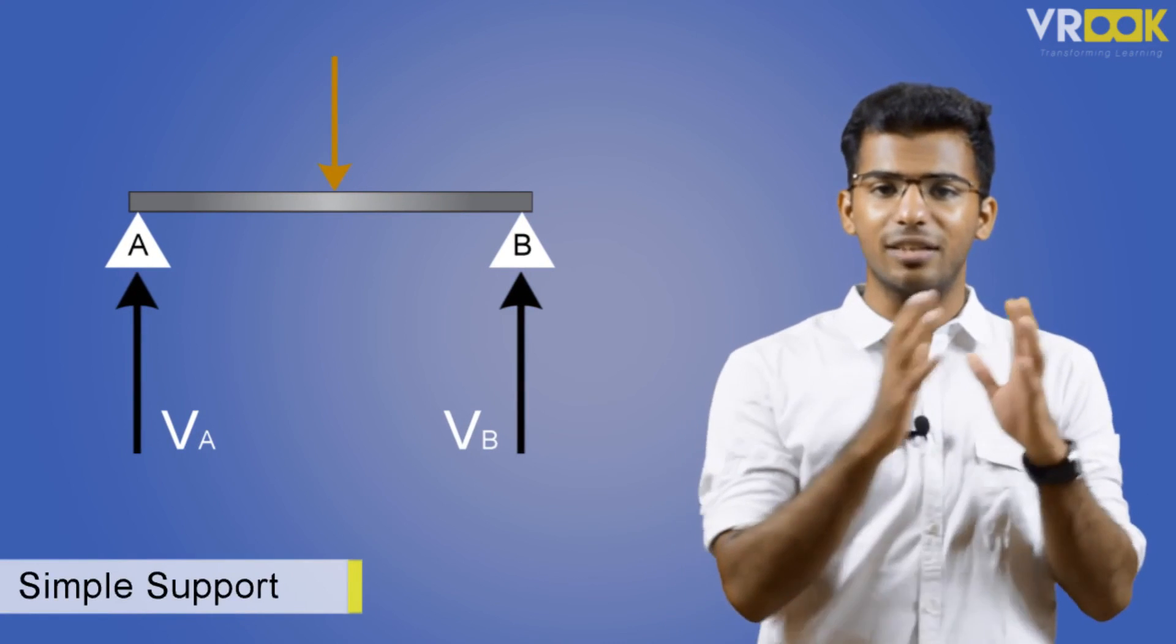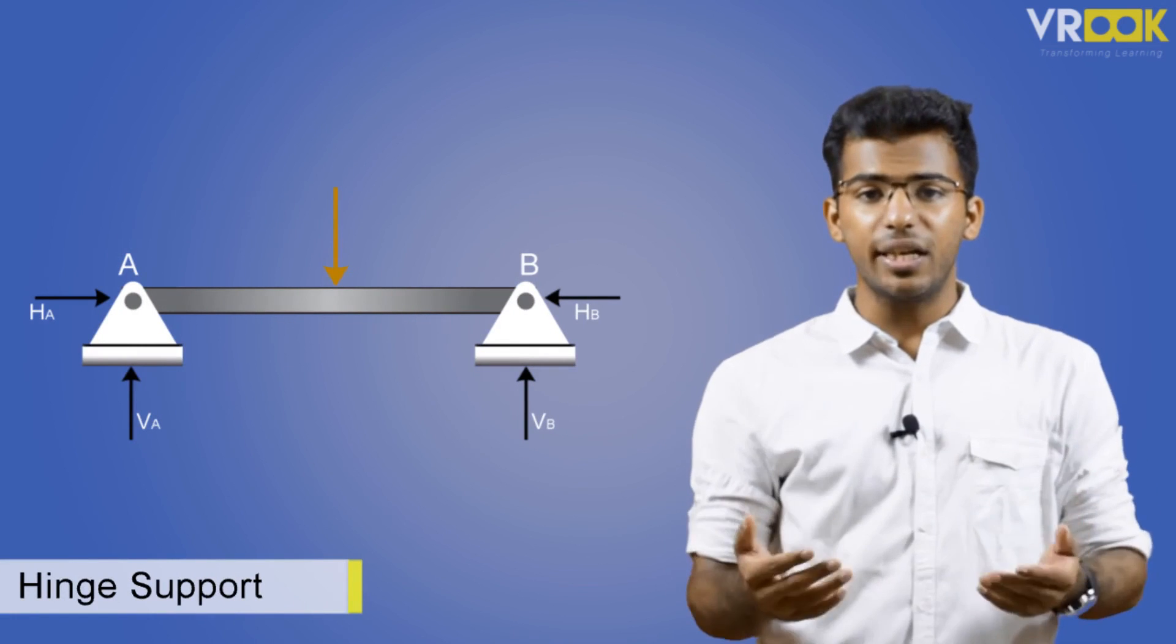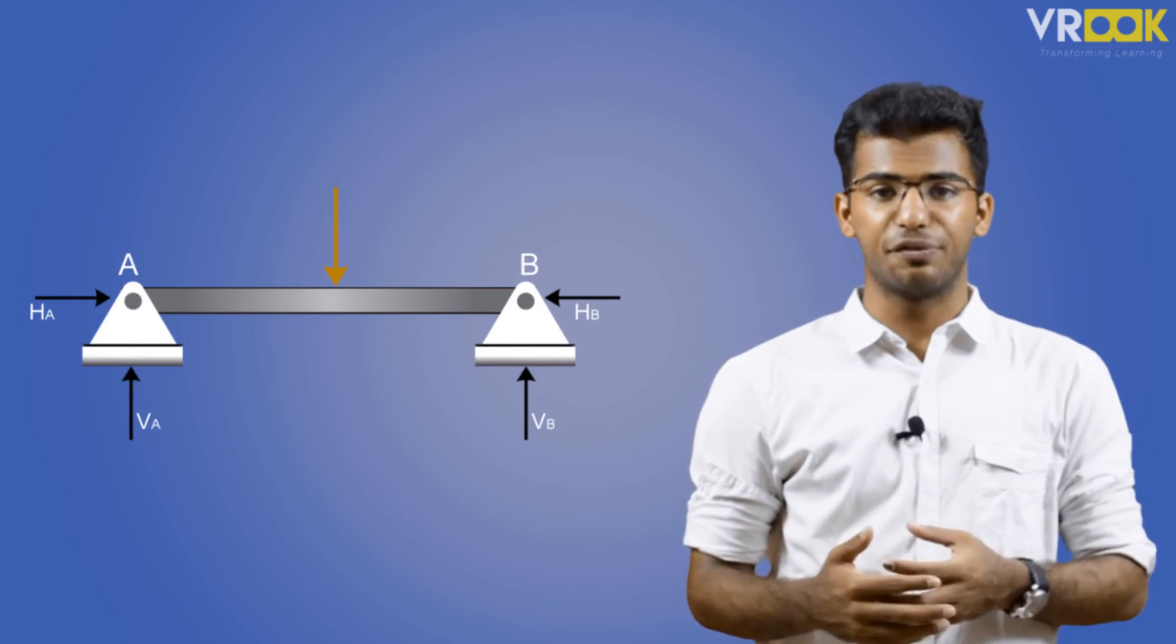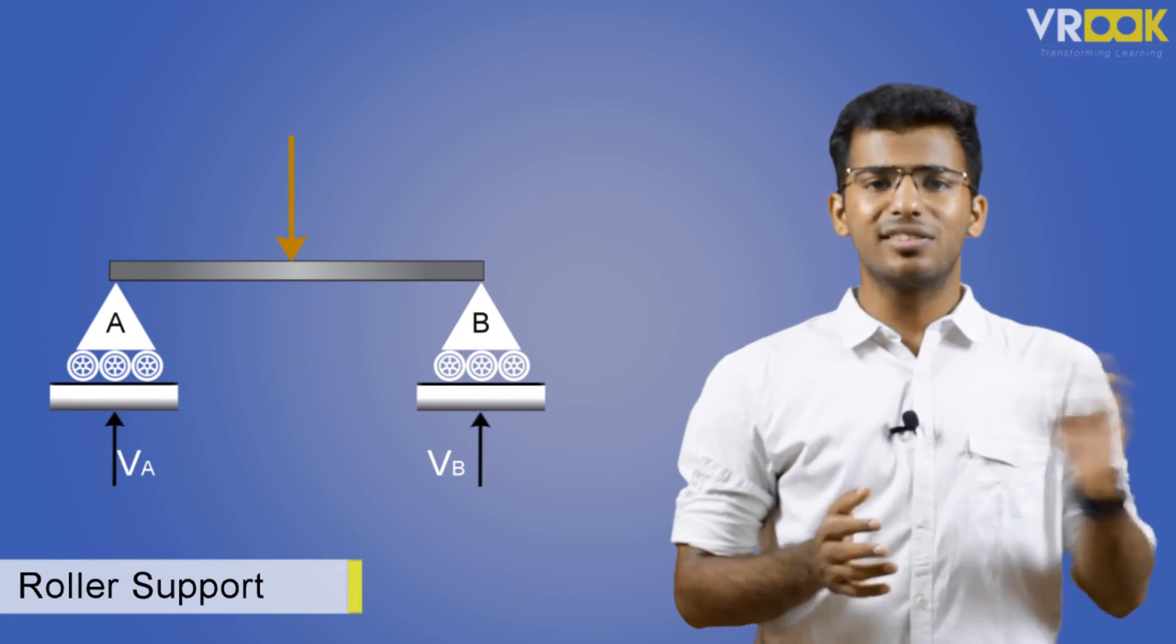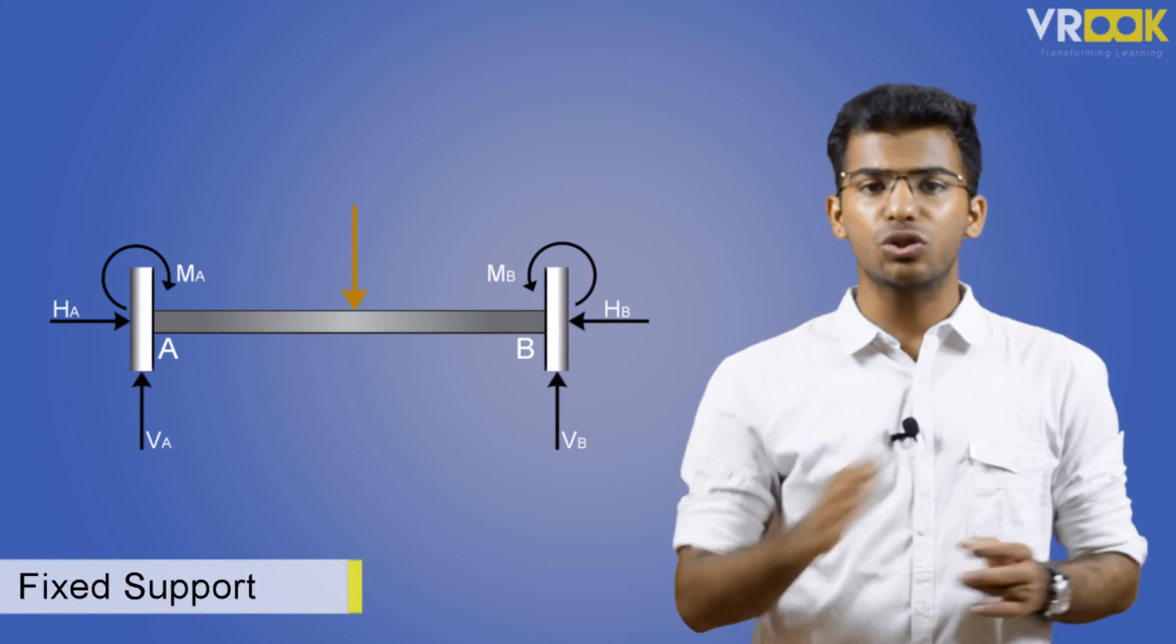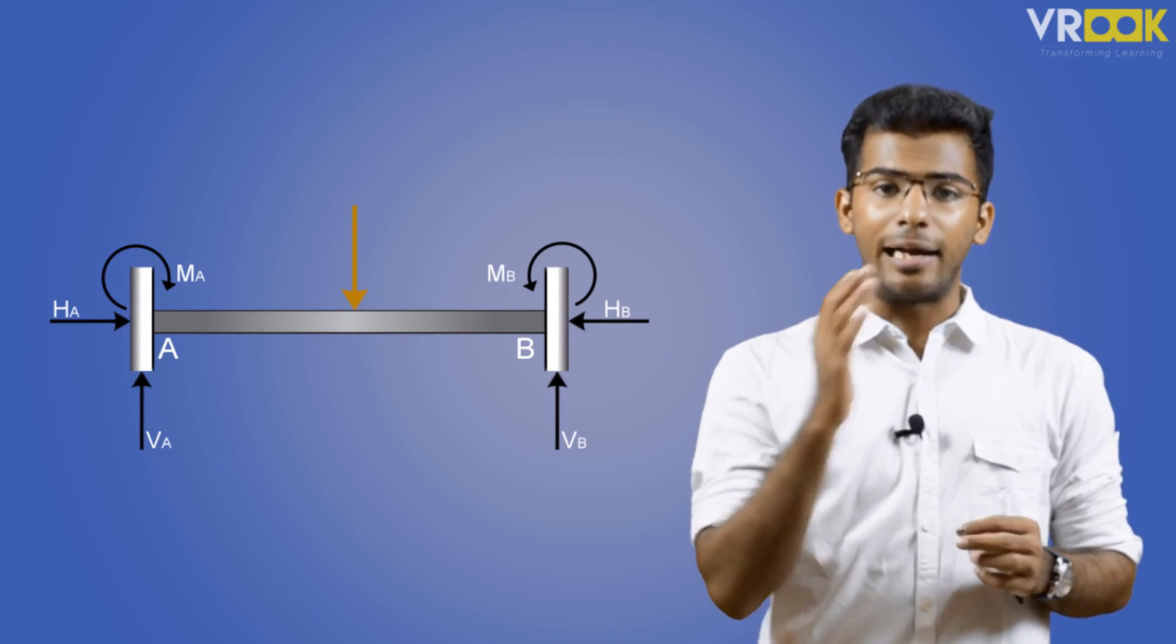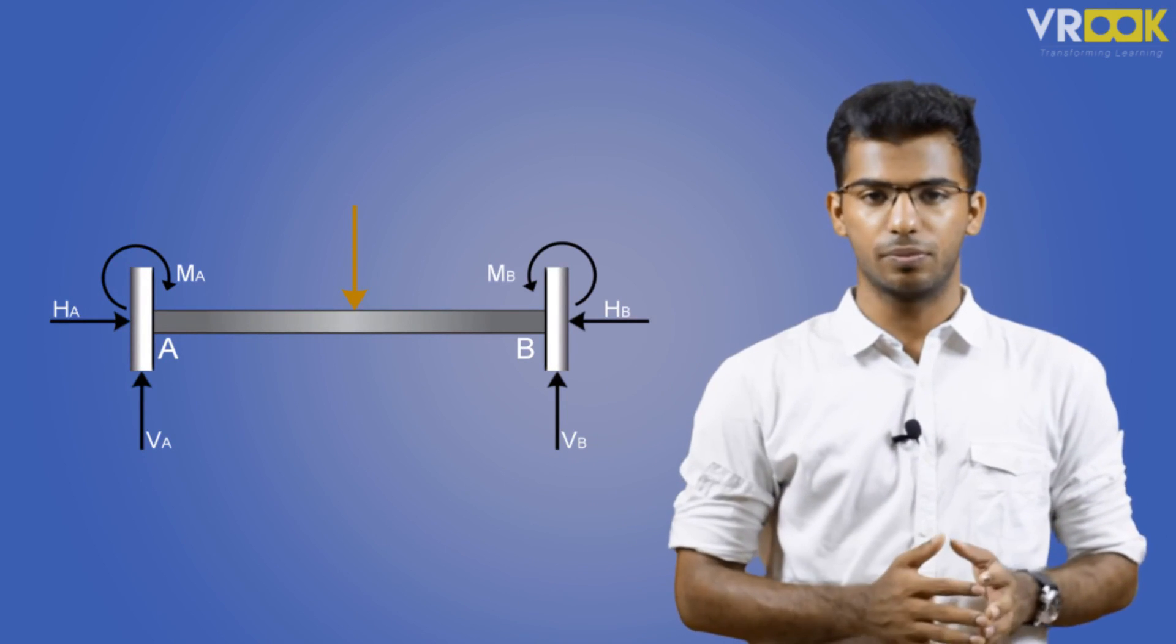Those are the four types of supports. Let's recall them once again. Simple support which has a single vertical reaction force. Hinge support which has a vertical and horizontal reaction force but no restriction for rotation. Roller support similar to simple support has only one reaction force in the vertical direction. And fixed support which restricts all degrees of freedom and has vertical, horizontal, and moment reaction force.